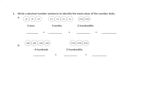So let's take a look at one of the problems. Problem number one asks us to write a decimal number sentence to identify the total value of the number disks. That seems pretty straightforward. Let's take a look at 1B. First we have, looks like, four disks of a hundred each. So that's four hundreds. What is four hundreds worth? I can write four hundred pretty easily, just like that. There's four hundred. Let's take a look at our next collection of disks.